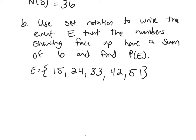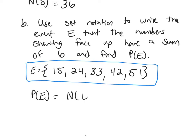Now that we have E, we can find the probability of E using our probability formula. It's the number of elements in E over the number of elements in our sample space. There are 5 elements in set E. Our sample space has 36 elements. So the probability is 5 over 36.